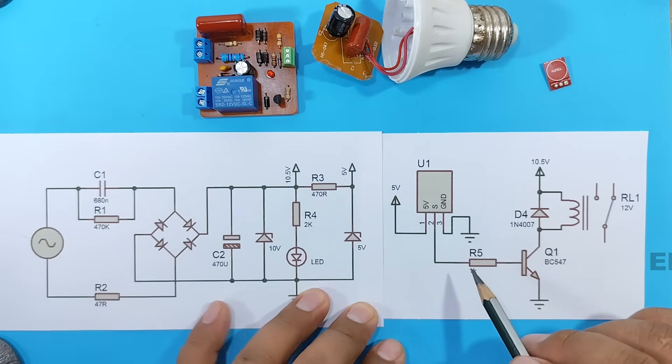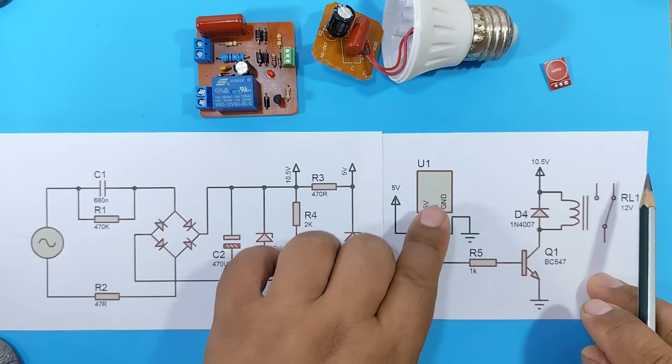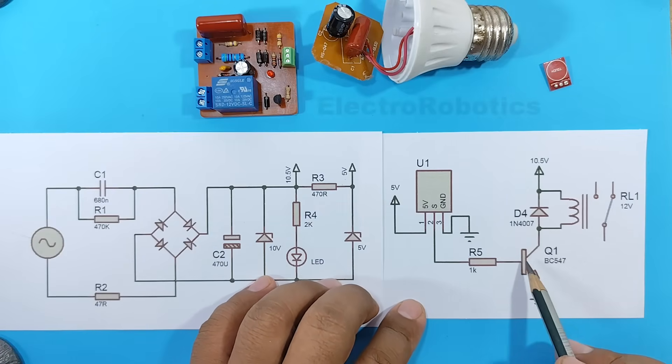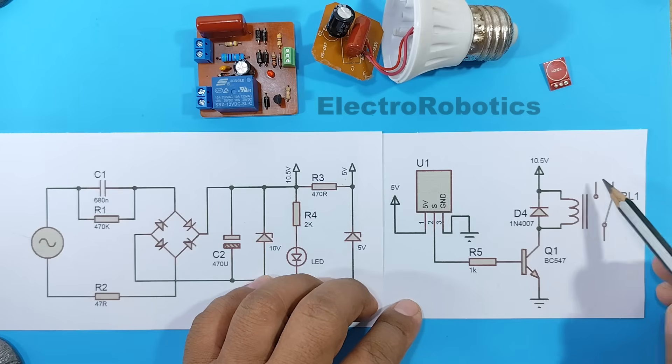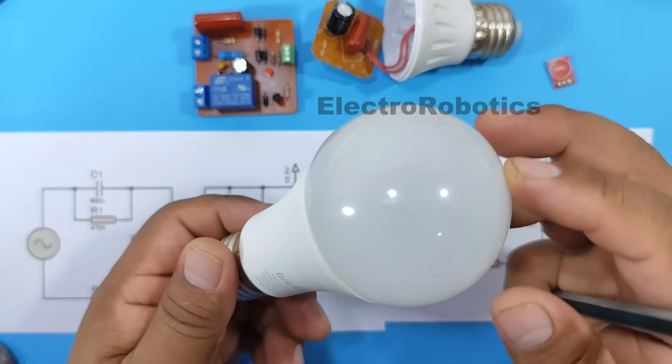And here we have the power stage, where we can see that our sensor is connected. This sends a positive signal to the transistor, which will activate the relay and, in turn, turn our light bulb on or off, a light bulb like this.